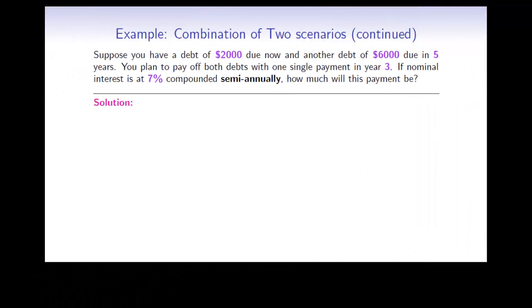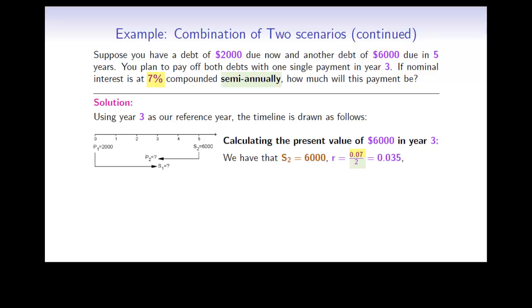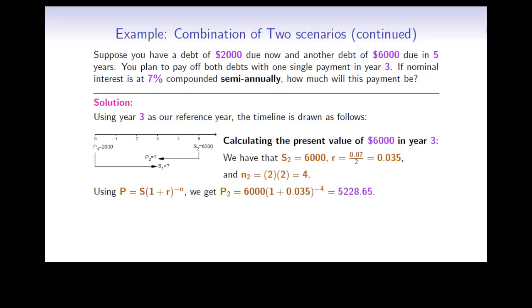Continuing with the solution, we now look at the $6,000 debt due in 5 years. Using year 3 as our reference year, we calculate the present value of $6,000 in year 3. We have S2 equals 6,000, the periodic rate R equals 0.07 divided by 2, and N2 equals 2 times 2 equals 4 periods. Using the present value formula P equals S times 1 plus R to the power minus N, we get P2 equals $5,228.65.